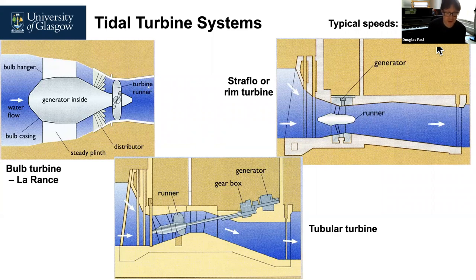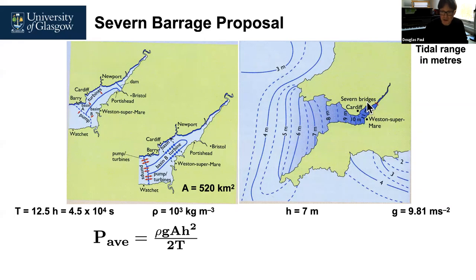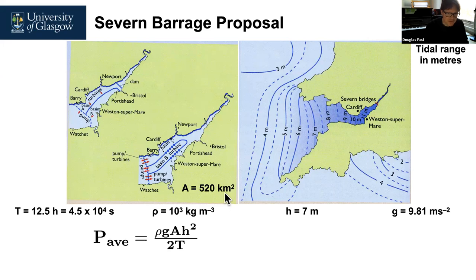Let me give you an example with some numbers to show how much energy and power could be generated with tidal schemes. In the UK, there have been three attempts with planning permission to build what's known as the Severn Barrage Tidal Scheme, located between Wales and Bristol across the Severn River. There are two proposed locations for the dam or barrage. The available area is 520 square kilometres, and the available head of water is 7 metres, which is quite substantial.